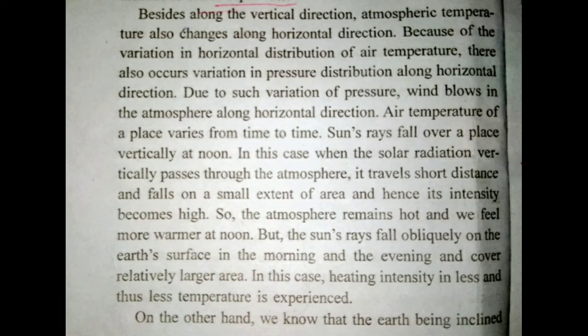Sun rays fall vertically over a place at noon, so the solar radiation travels a short distance through the atmosphere and falls on a small area — its intensity becomes high, and we feel warmer at noon. But in the morning and evening, sun rays fall obliquely on the earth's surface and cover a relatively larger area, so heating intensity becomes less and lower temperature is experienced.